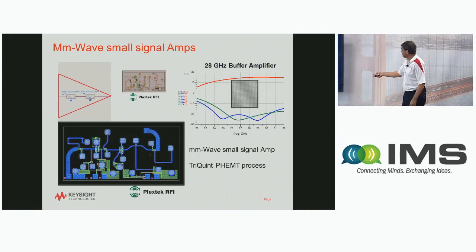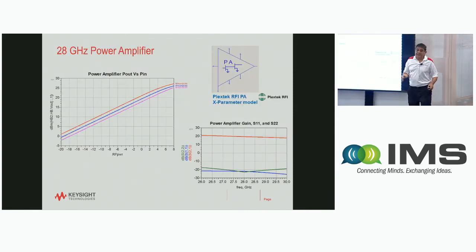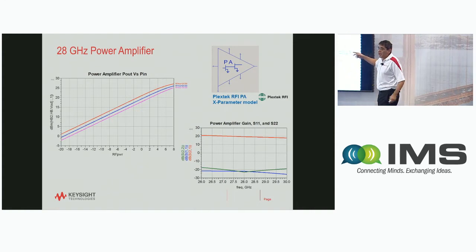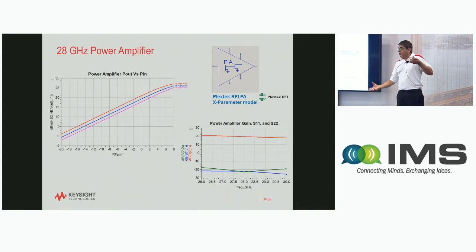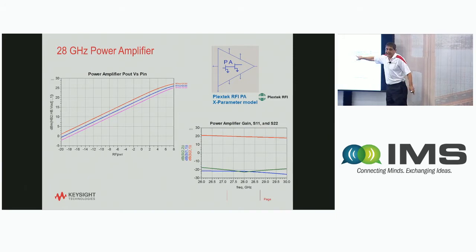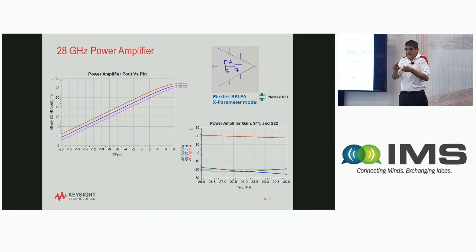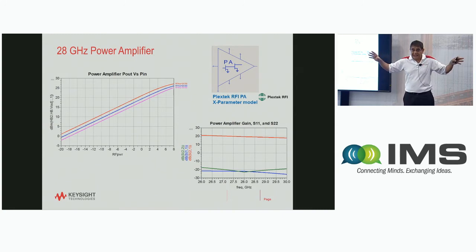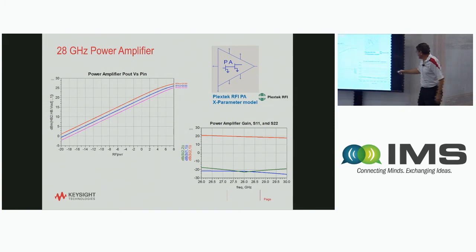The power amplifier was not fully completed at the time of implementation — I had the schematic but not the full layout. This raises an important issue: when working with a vendor or system person, you may not want to share your topology or IP. So I took this power amplifier and generated an X-parameter model. X-parameters model nonlinearity — it's a nonlinear model that exactly replicates the PA behavior — but with the X-parameter model, you don't expose the topology or IP.